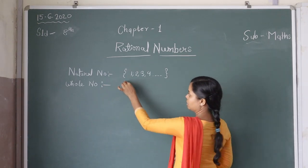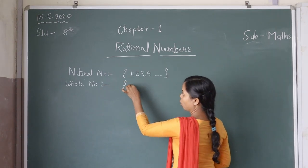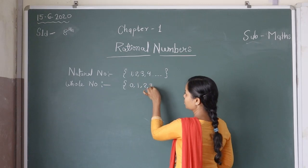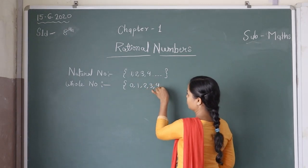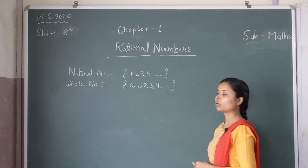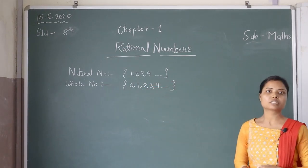The set of zero and positive numbers are called whole numbers.